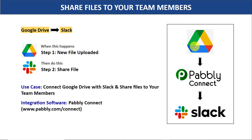So here you have two choices. The first choice is you just create a file link, copy that link, compose a message, and paste that file link in Slack. Now this traditional approach is very repetitive and tiresome, so I would suggest that you bring in some automation so that when a new file is uploaded in Google Drive, it will automatically share this file on Slack.